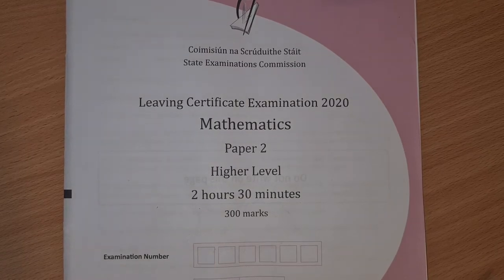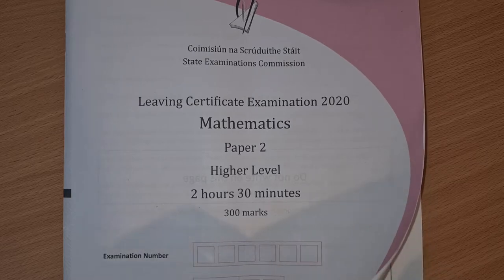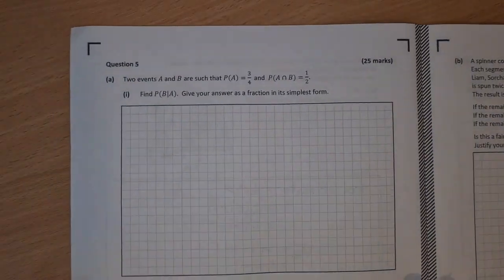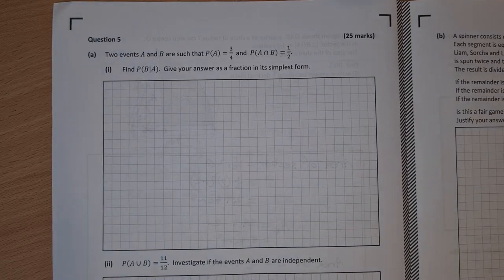Leaving Cert Higher Level Maths 2020 Paper 2. This is the solution video to question 5. Now question 5 is our first probability question and it's worth 25 marks.